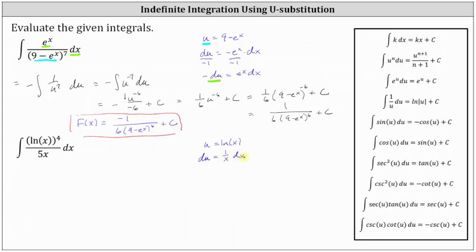Looking back at the integral, we can substitute u for natural log x, which means the numerator can be written as u to the fourth. Notice the denominator is 5x, not x, but we can factor out the 5 from the denominator by factoring out 1 fifth. We also know we can substitute du for 1 divided by x dx.